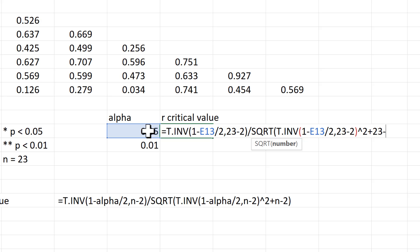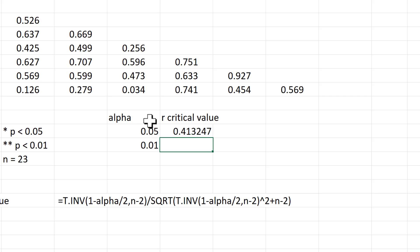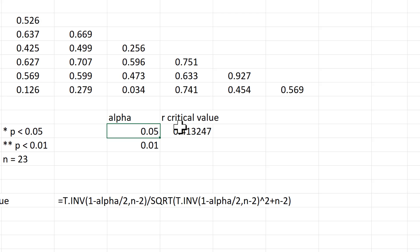Close brackets and enter. This is the r-critical value for an alpha of 0.05.